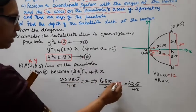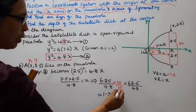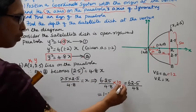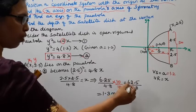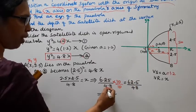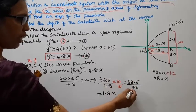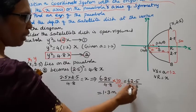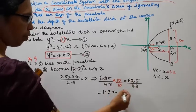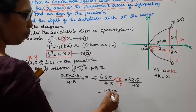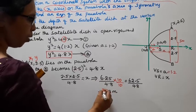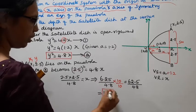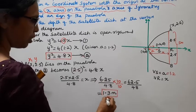Multiplying numerator and denominator by 10: 62.5 divided by 48. Dividing gives approximately 1.3 meters.